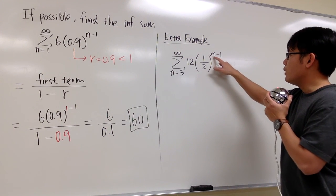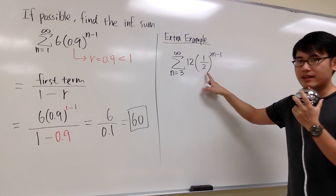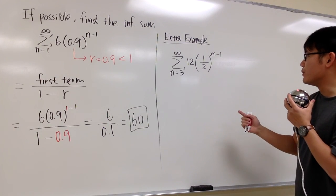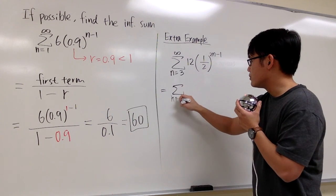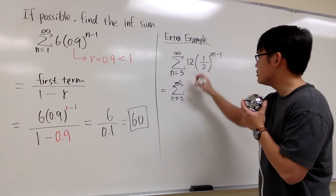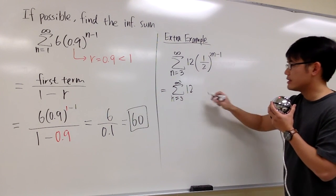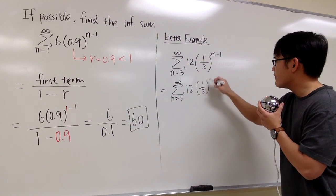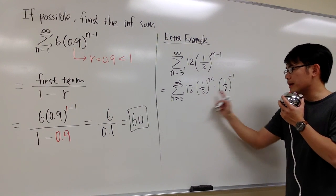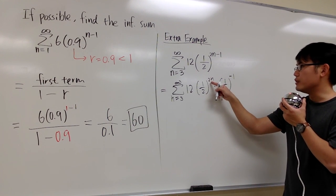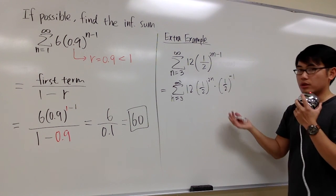If we have 2n minus 1 as the exponent and 1 half as the base, then 1 half is not the common ratio yet. We need to break this apart. We rewrite (1/2)^(2n−1) as (1/2)^(2n) times (1/2)^(−1). When we multiply these two and combine the exponents, 2n plus negative 1 gives us 2n minus 1, so this is just breaking it apart.